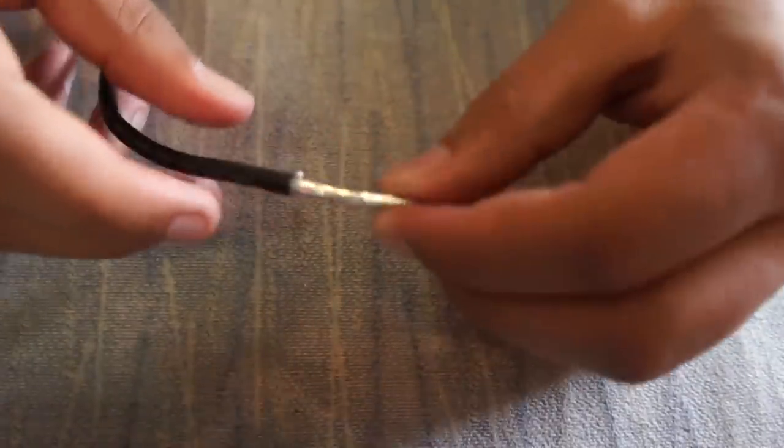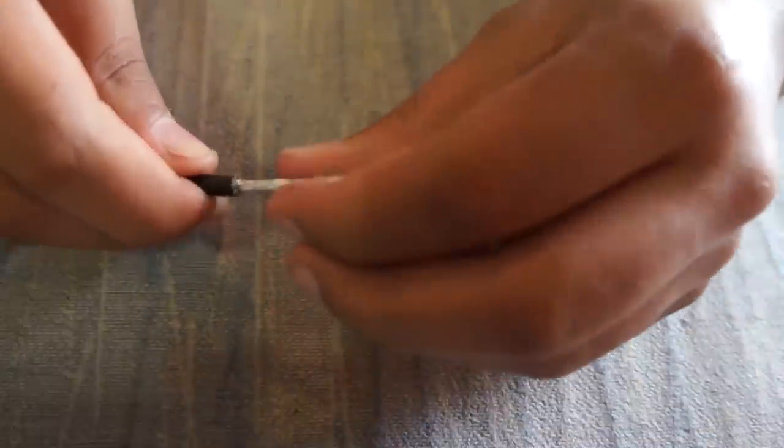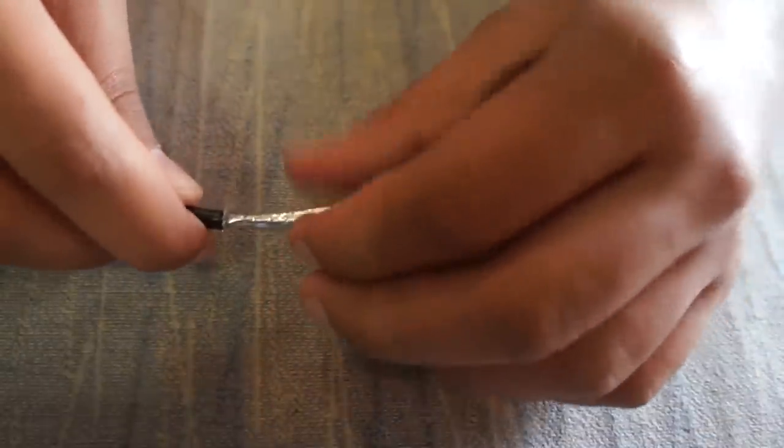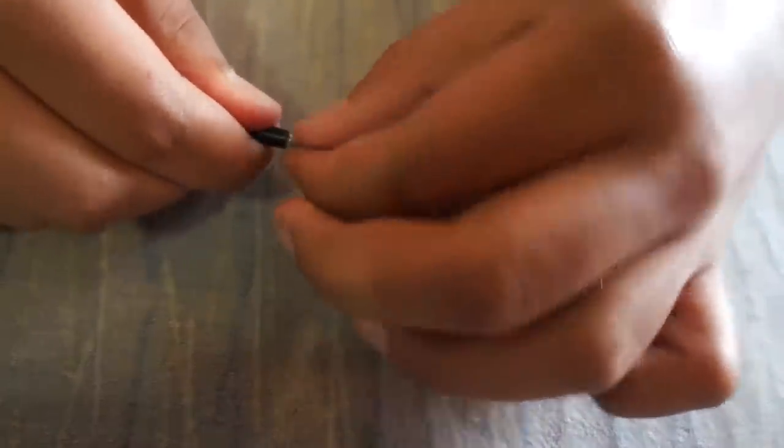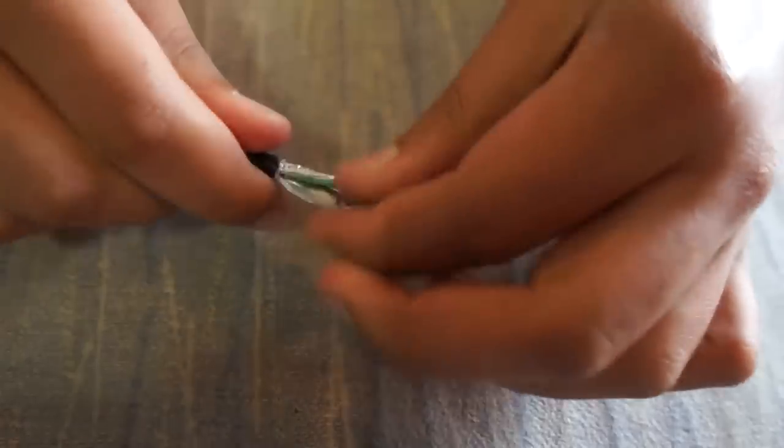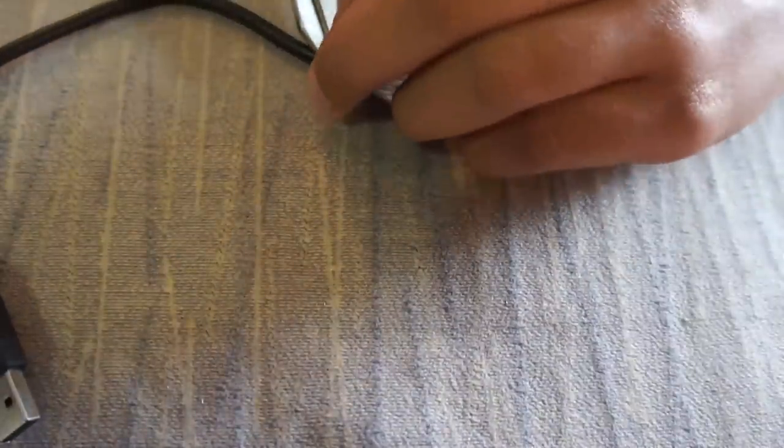Once you get that done, you want to throw those wires away, those tiny little shavings. Make sure you sweep them lightly with your hand because they can stab you. Now you're going to have this tin foil wrap. You're going to want to take that off. Usually there's a little flap at the end that you can just tear from the very bottom and it just comes off.